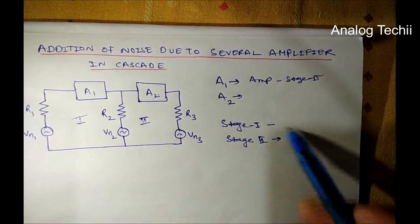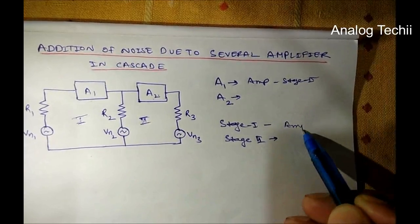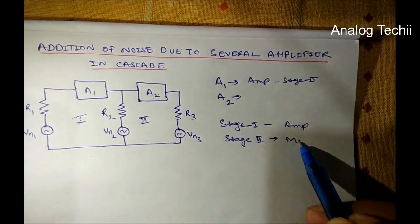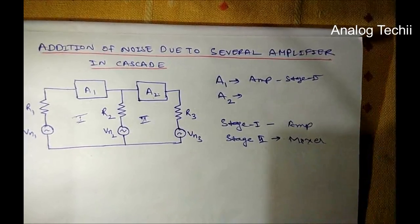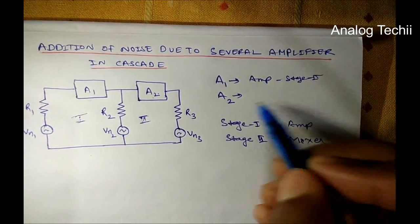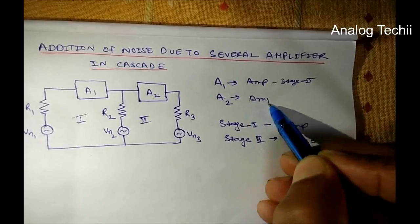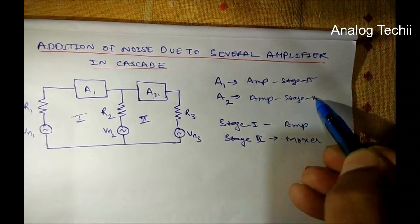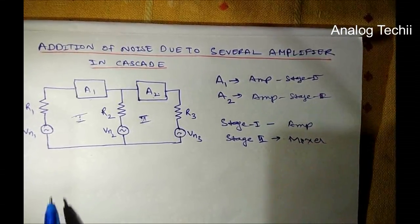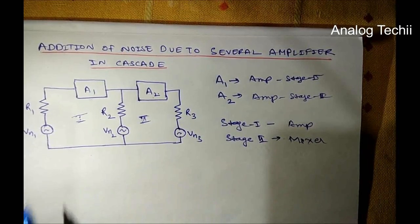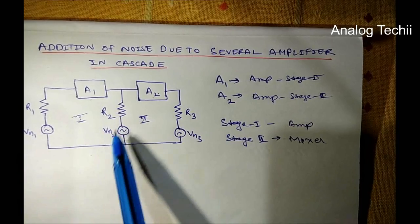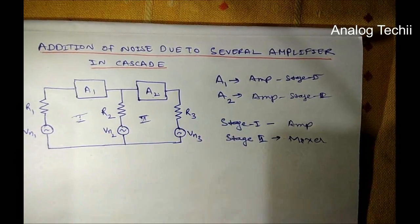Stage 1 is also called the amplifier and this stage is known as the mixer. We can divide it like this. A2 is also an amplifier at stage 2. This cascade connection can be divided in this format where R1 has noise voltage VN1, R2 has VN2, and R3 has VN3.